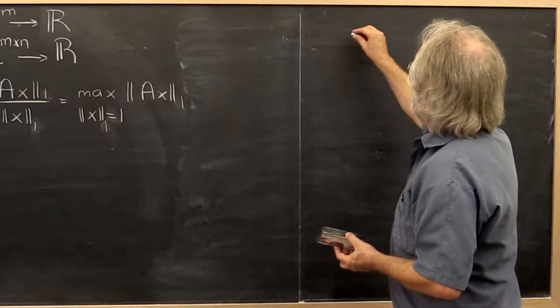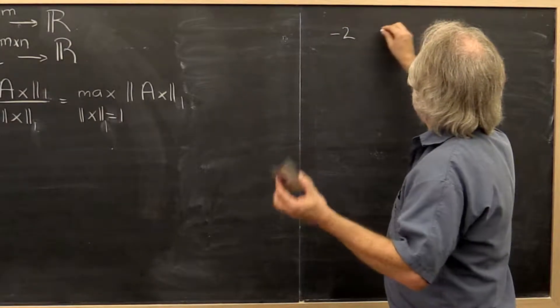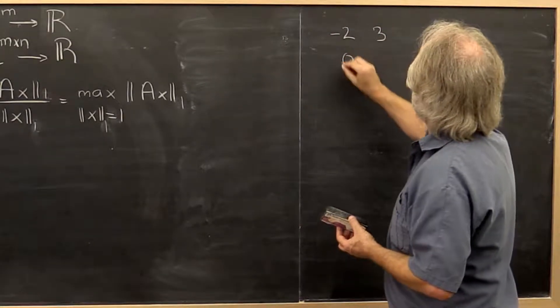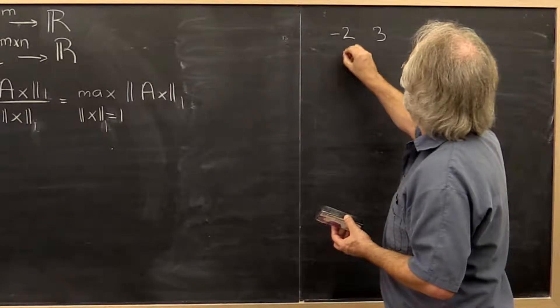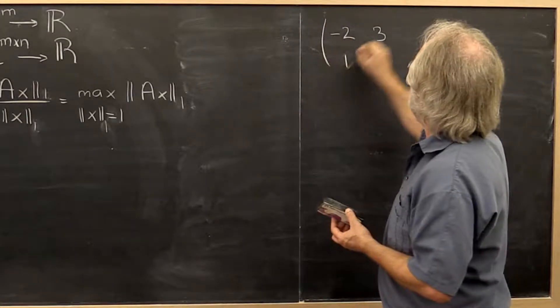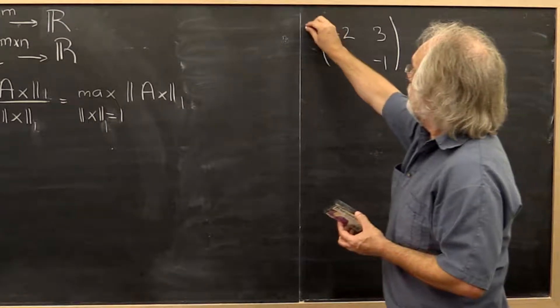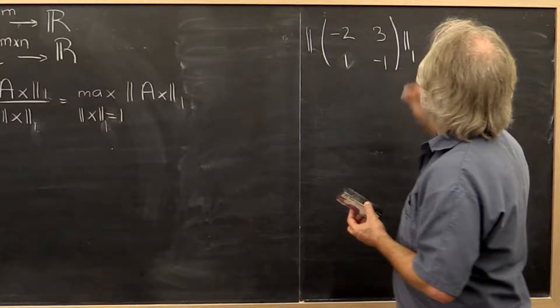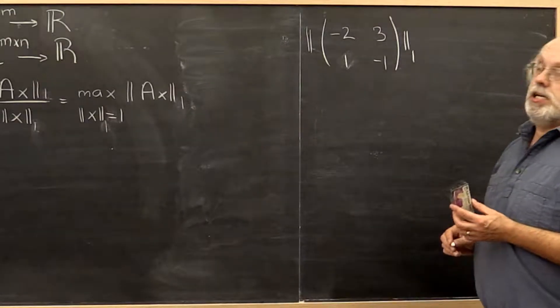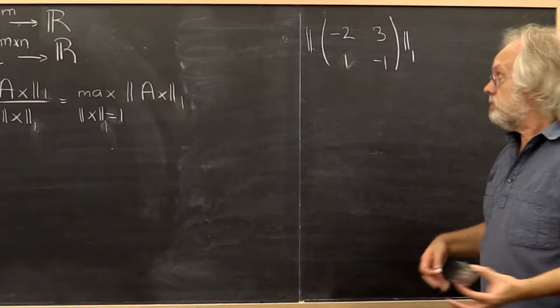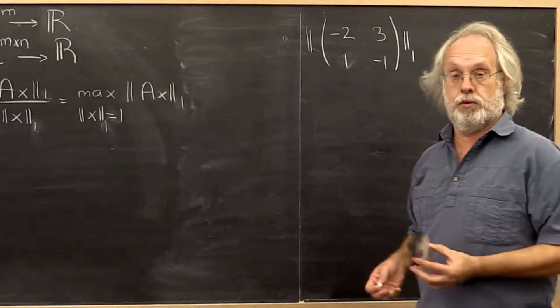Let's take an arbitrary matrix. Let's make this 1 minus 1. If you want to evaluate the matrix 1 norm, it turns out there is a very simple formula for this.